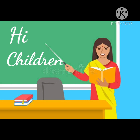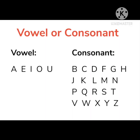Yesterday you watched a video on A and AN. Children, we have learned that there are special letters in the English alphabet and they are A, E, I, O, U. We call them vowels. What are these vowels? Can you tell me what are vowels, children? A, E, I, O, U. These letters are called vowels, and the remaining letters are called consonants. The other letters in the alphabet are called consonants. Did you remember, children?